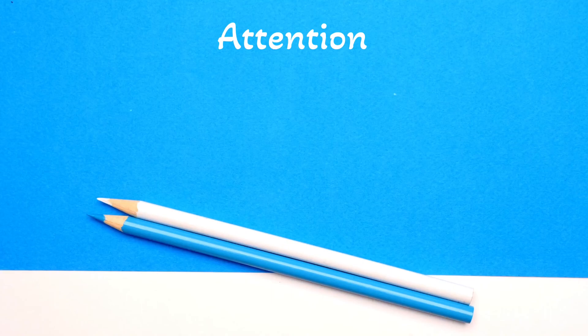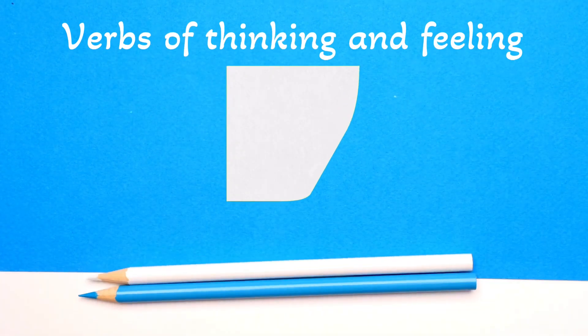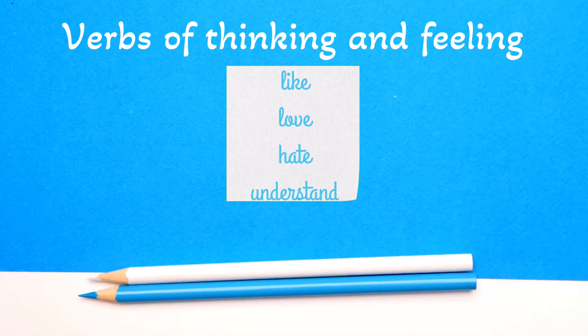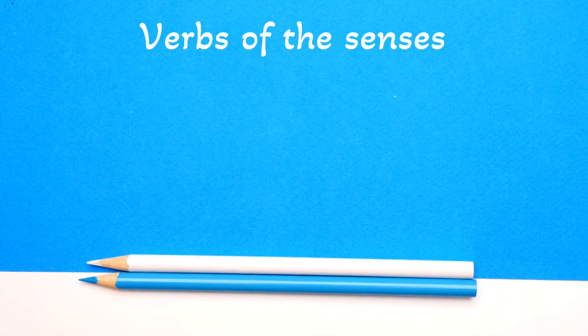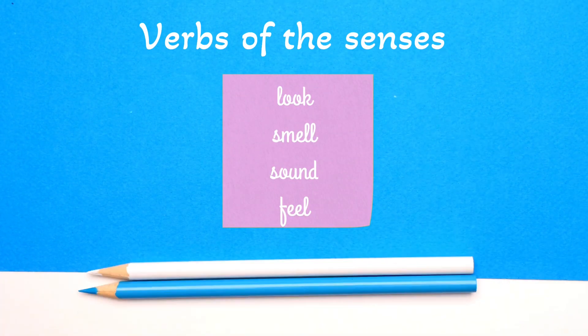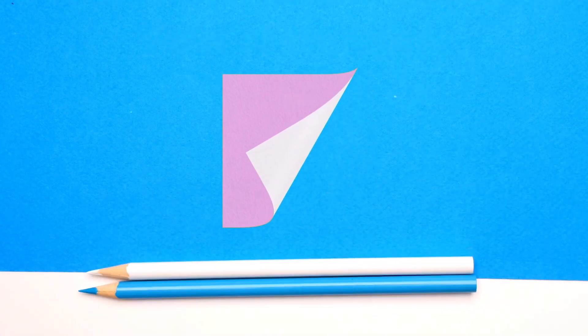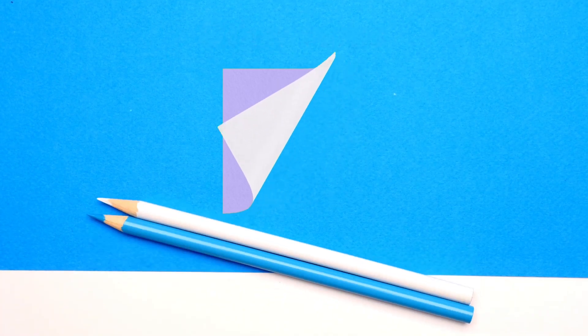Attention! We do not normally use present continuous with static verbs. These include verbs of thinking and feeling — like love, hate, understand, etc. — verbs of the senses — look, smell, sound, feel — and other verbs such as agree, need, own, and belong. This is all for the affirmative form of present continuous tense.